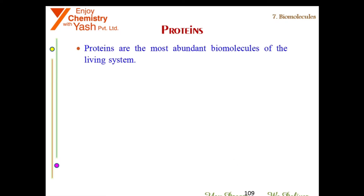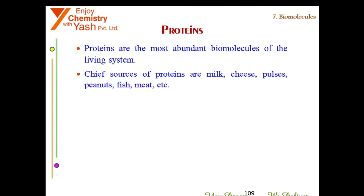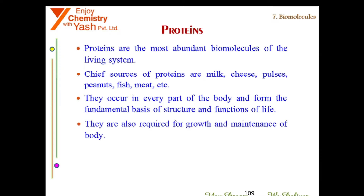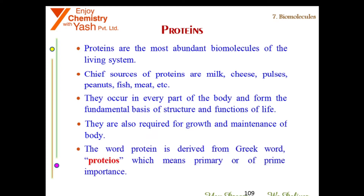Proteins are the most abundant biomolecules of the living system. Chief sources of proteins are milk, cheese, pulses, peanuts, fish, meat, etc. They occur in every part of the body and form the fundamental basis of structure and functions of life. They are also required for growth and maintenance of the body. The word protein is derived from the Greek word 'proteios', which means primary or of prime importance.